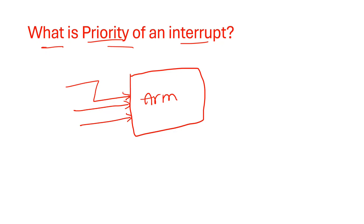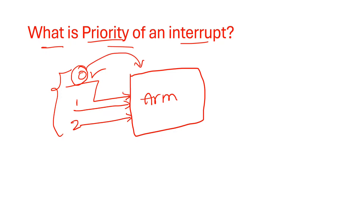Let's suppose the first interrupt has priority 0, the second interrupt has priority 1, and the third interrupt has priority 2. Now, according to ARM Cortex-M4, the interrupt with the lowest priority number will be executed first. The interrupt with priority 0 should be executed first, then the interrupt with priority 1, and then the second one. This is how the interrupts are executed by the processor.